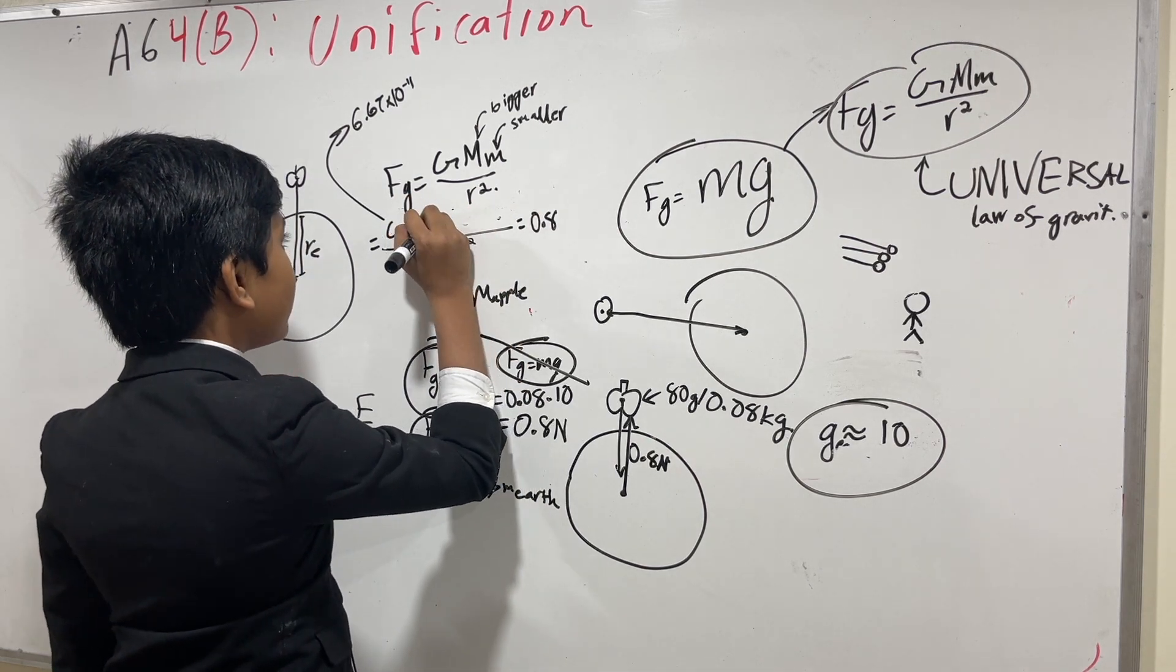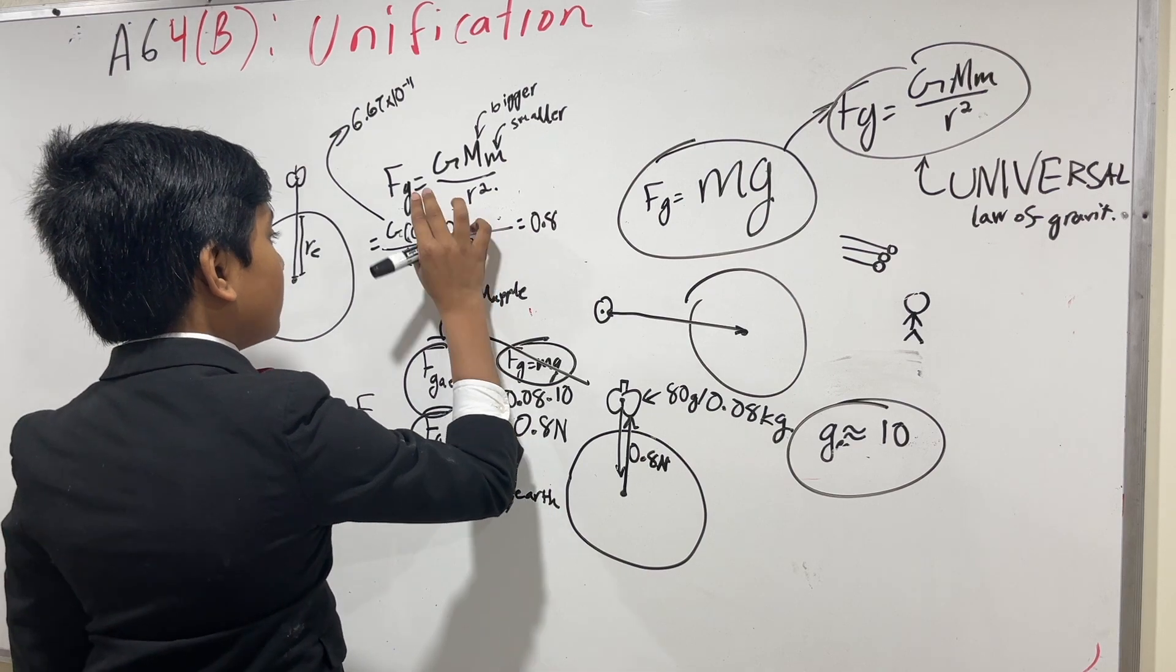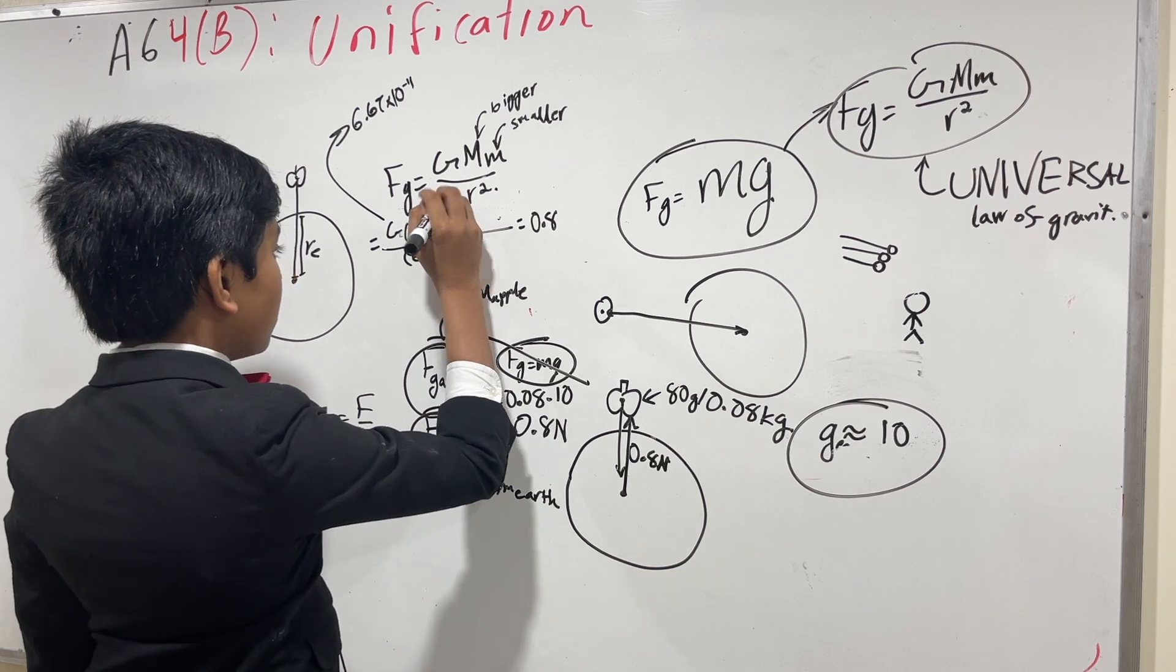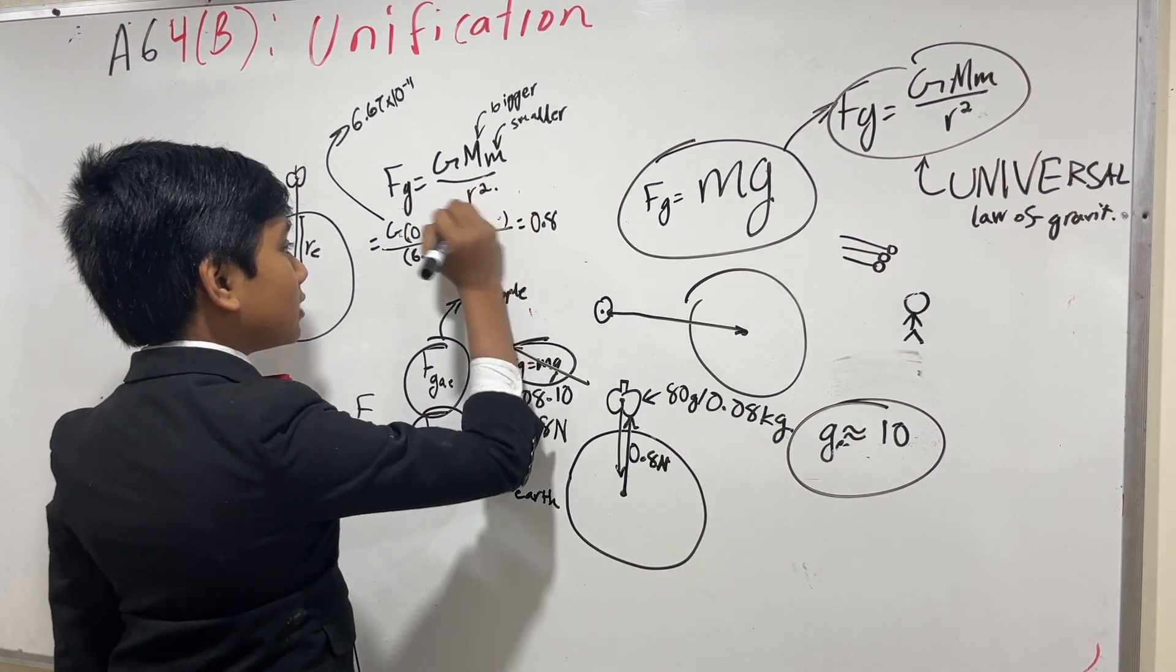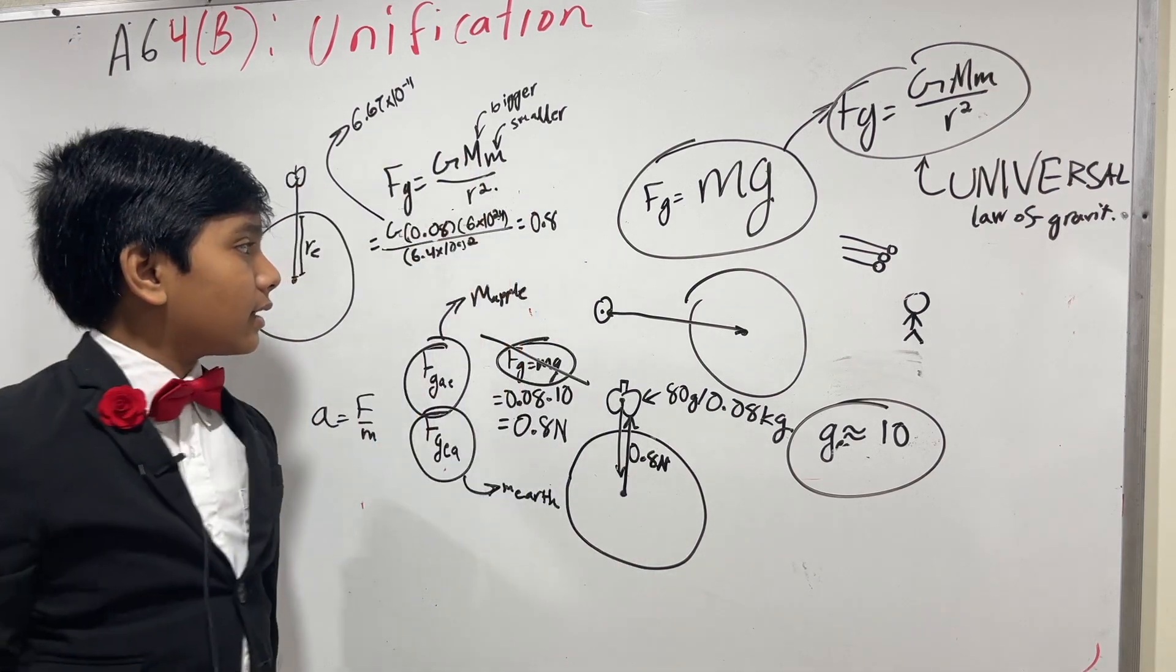remember your arithmetic. Oh shoot, that said 0.08 kilograms, sorry. Remember your arithmetic, kids. This, multiplication has the commutative property.